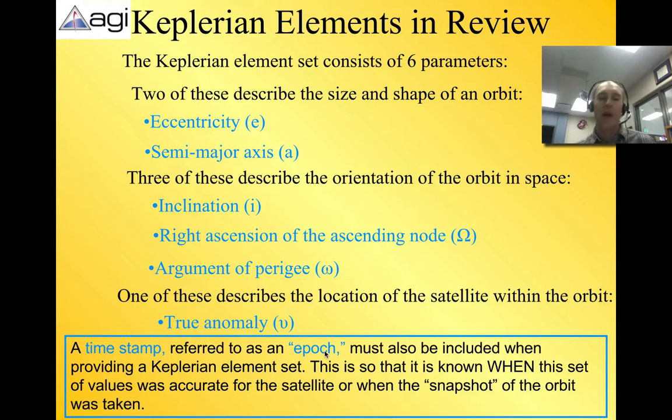And so then you have your epoch right there, your time stamp. And that's when it met this true anomaly value of a certain number of degrees in this argument of perigee under this right ascension of the ascending node at this particular inclination with the semi-major axis of this and the eccentricity of this. So all of these parameters then can tell you exactly what that satellite is doing in that exact orbit.